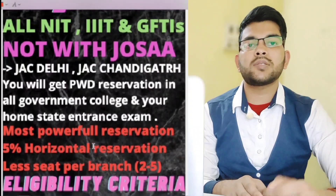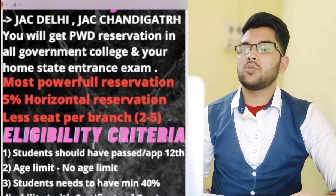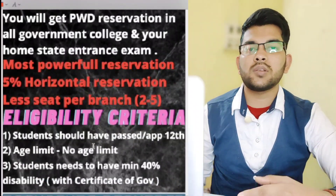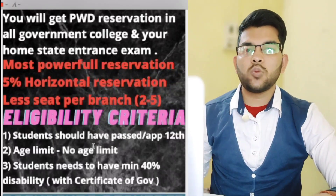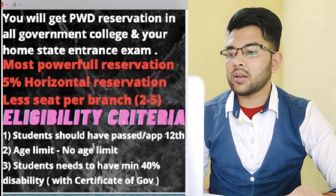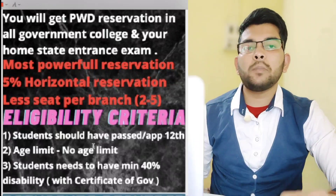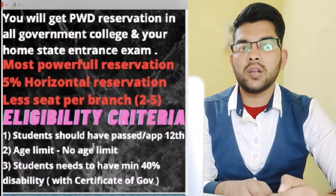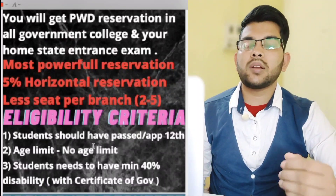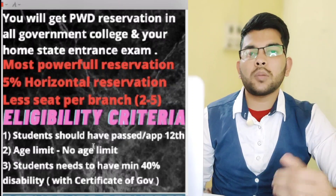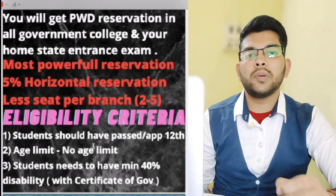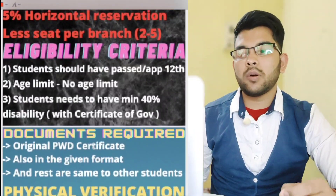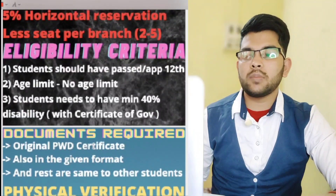Regarding eligibility criteria: a student should have passed Class 12th or be appearing in Class 12th, similar to other students. There is no age limit in this examination. For JEE Mains, a student needs to have a minimum 40 percent disability. Without 40 percent disability, you will not be eligible for PWD reservation. Your certificate must mention 40 percent or more disability.